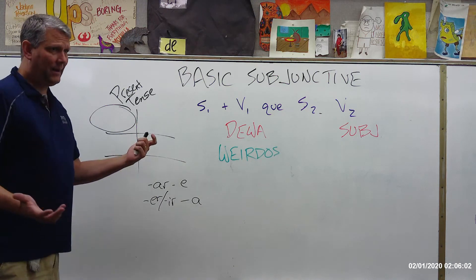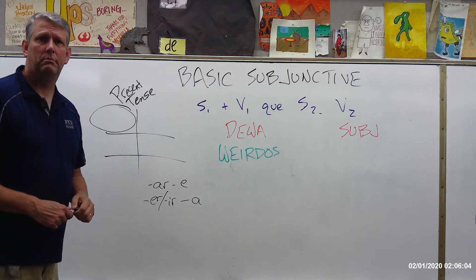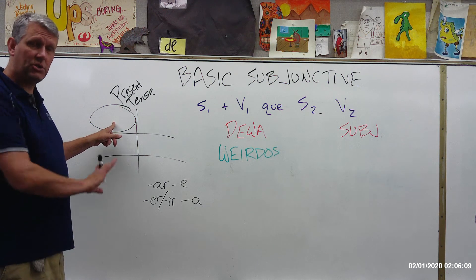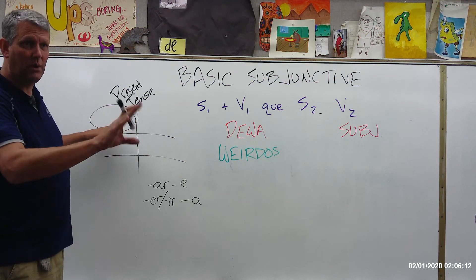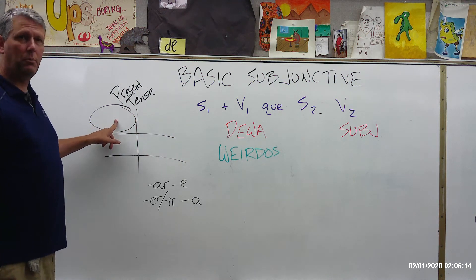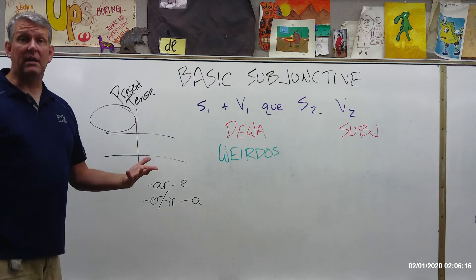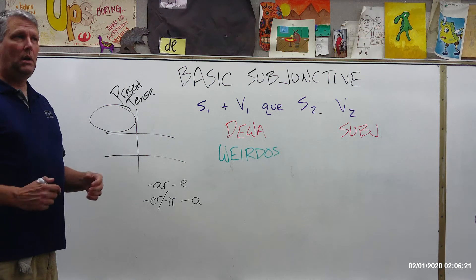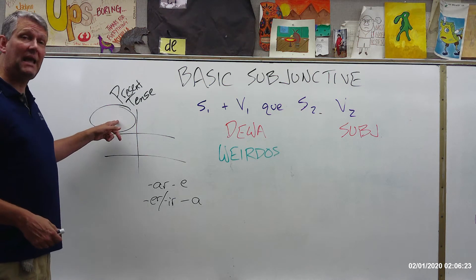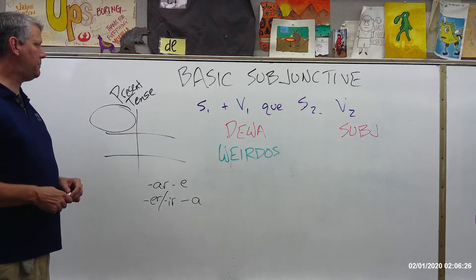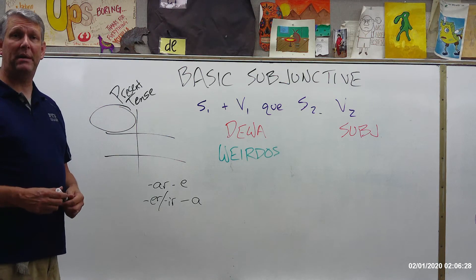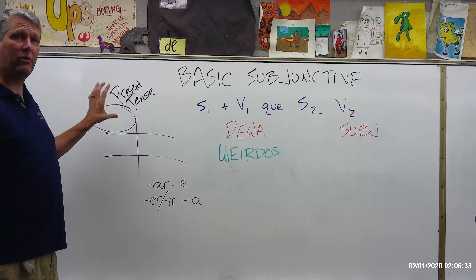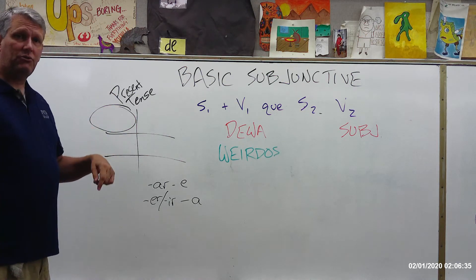So if we want, like, besar — to kiss — the yo form is beso, present tense. This is just the first step; this isn't the subjunctive yet. So beso would be the yo form. Escribir: the yo form is escribo. Vivir: the yo form is vivo. Tener: the yo form is tengo — careful on that. A stem-changing verb such as empezar would be empiezo. So you take that yo form, whatever it is, and then you're going to drop the O.